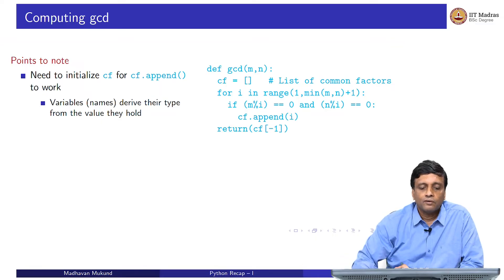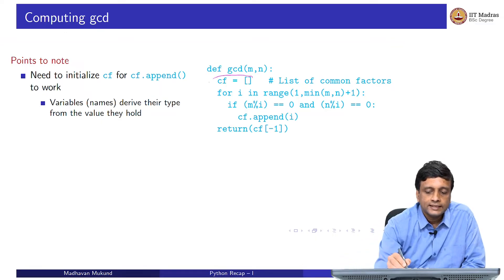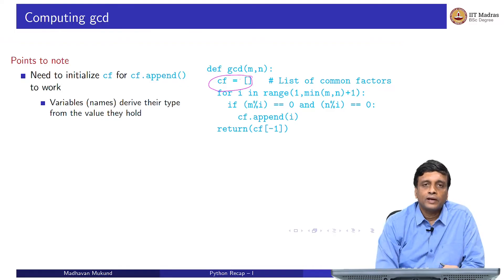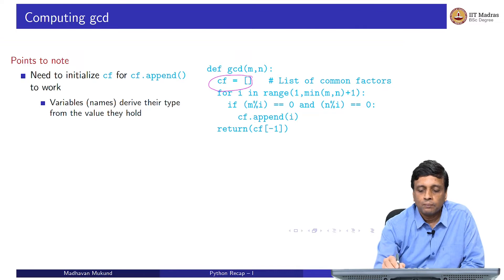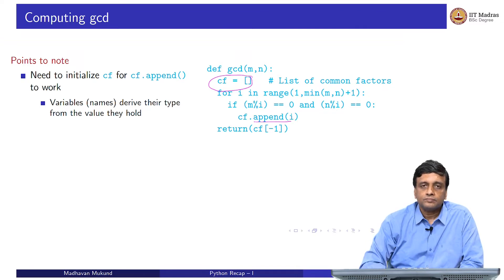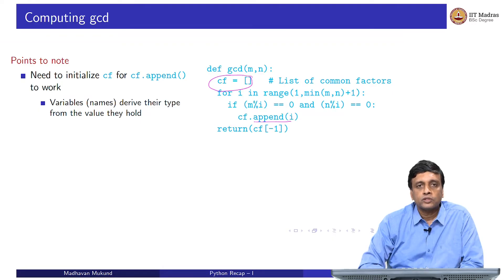Let us just look at this code a little more carefully to understand all the nuances. The first thing is that we need to do this initialization here. We cannot just start off with cf inside the body of the loop, because we are applying this append function. The append function applies to any name which is holding a list. But in Python, as you know, there is no way to announce to the Python interpreter that cf is a list without actually setting a value. The only way that Python can associate types with names or variables is to look at the value that that variable holds.